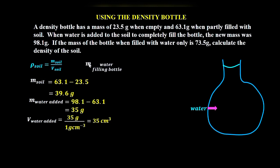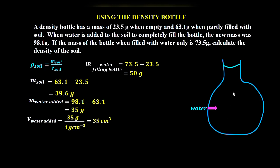First, we get the mass of water filling the bottle: 73.5 minus 23.5. 73.5 is the mass of the density bottle plus water, and 23.5 is the mass of the density bottle alone. The difference gives us 50 grams, which is the mass of water filling the bottle.